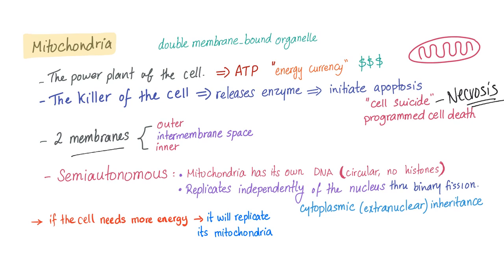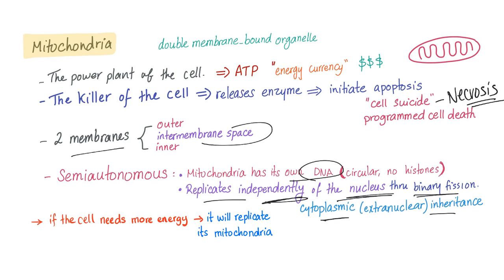Two membranes: outer membrane and inner membrane, with an intermembrane space in between. Mitochondria is semi-autonomous, which means it has its own DNA. It replicates independently of the nucleus through the process of binary fission — this is cytoplasmic inheritance, also known as extra-nuclear inheritance. If the cell needs more energy, it will replicate its mitochondria.